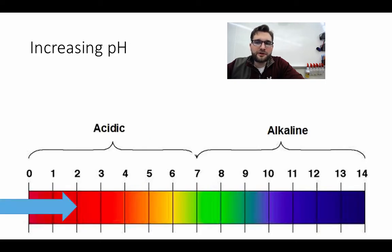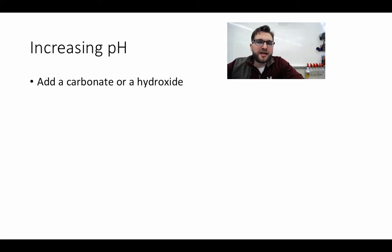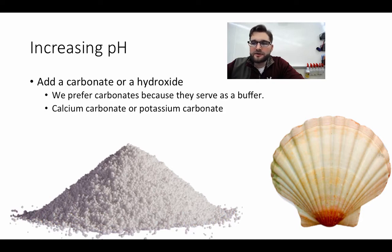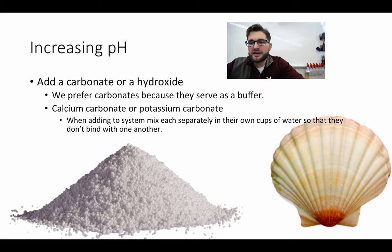If we need to increase the pH, we're going to add either a carbonate or a hydroxide. We prefer carbonates mostly because they're going to serve as a buffer as well. We can add calcium carbonate or potassium carbonate. Calcium carbonate we should be familiar with — it's simply found in seashells, so it's very natural and won't cause many problems in our system. When we add those two substances, we want to mix them separately in their own cups of water so they don't bind together. If we mix them together and then try to dissolve them in solution, they'll clump together, and we'll end up with large clumps in the system.